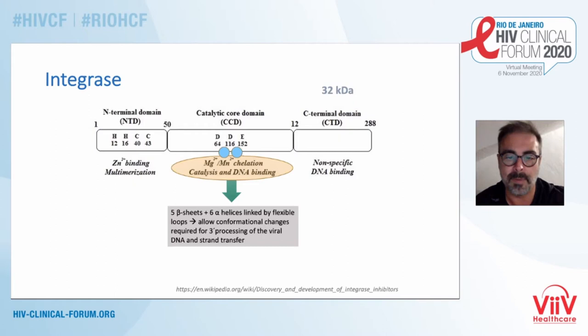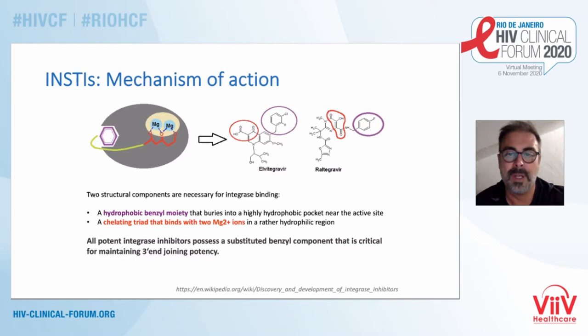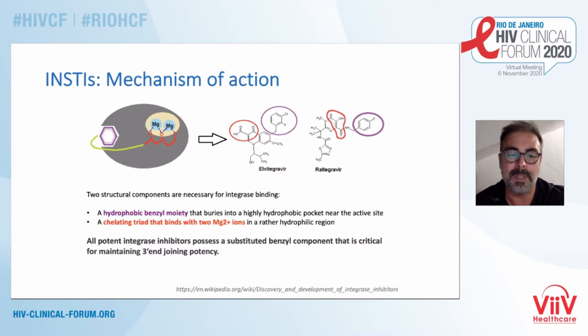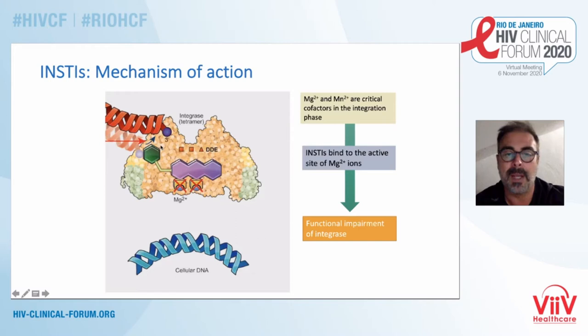All INSTIs have a similar structure — they can differ, but they share two moieties. In purple, you can see a hydrophobic benzyl moiety that inserts into a highly hydrophobic pocket near the active site, and in red, a chelating triad that binds to the two magnesium ions in a rather hydrophilic region. These two regions are very similar across the different INSTIs, and everything in between changes. The chelating binding leads to functional impairment of integrase.